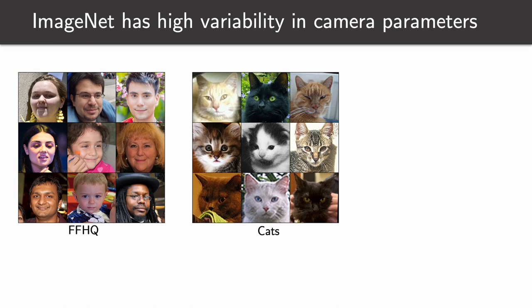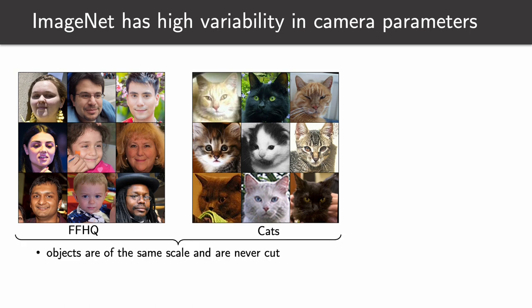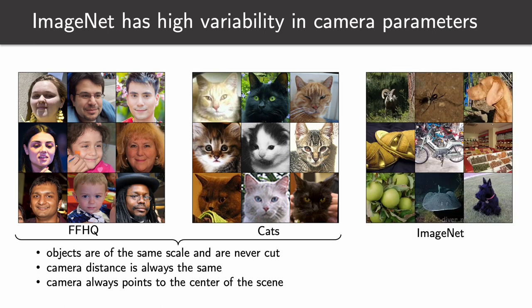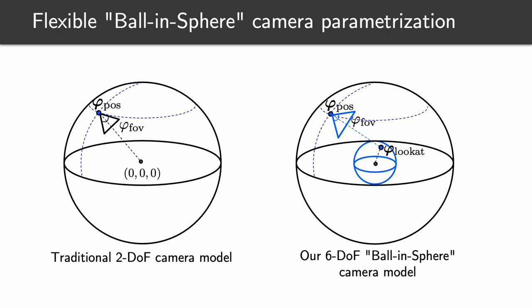Another issue with in-the-wild datasets is that they have very high variability in camera parameters. Currently, two popular benchmarks for 3D synthesis are FFHQ and CATS — well-curated and aligned datasets where objects are of the same scale and almost always fully visible, camera distance is always the same, and camera always points to the center of the scene. In contrast, for ImageNet some objects are very far away, others are very close by, and the camera might focus not only on the full object but on some of its parts, like the head. This is why we develop a more flexible camera parameterization.